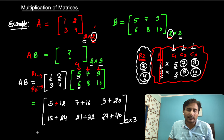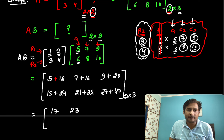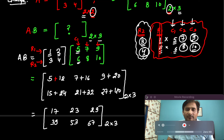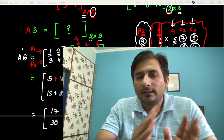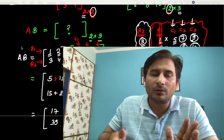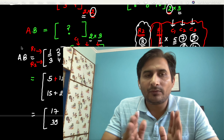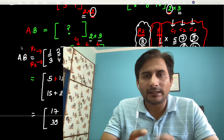So the order of this matrix is 2×3 and the final answer is: solving it we get 17, 23, 29, 39, 53. The concept in multiplication is to multiply row 1 with all the columns of the second matrix, then row 2 with each column of the second matrix, putting a plus sign between corresponding element products.